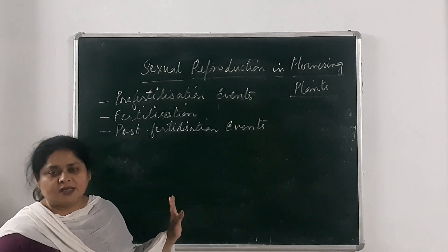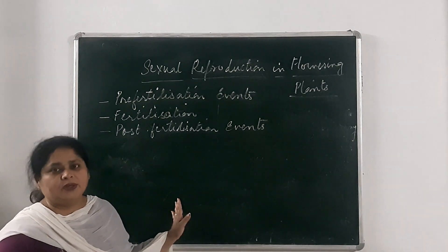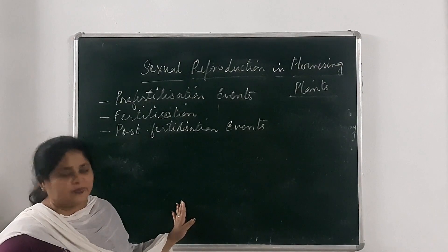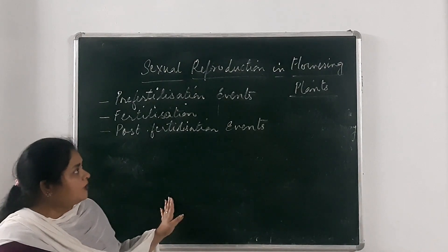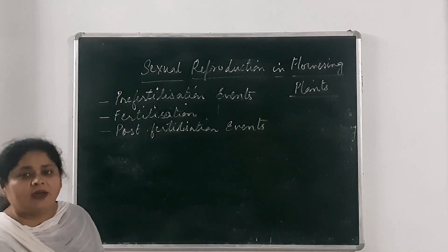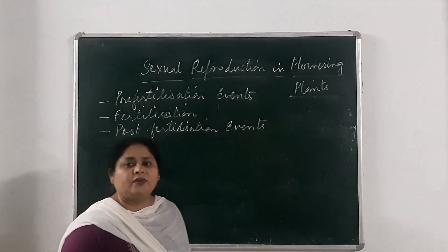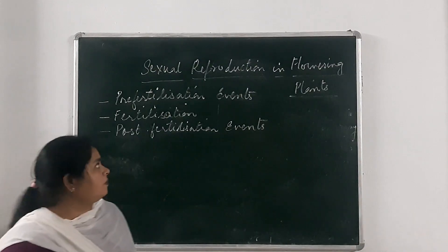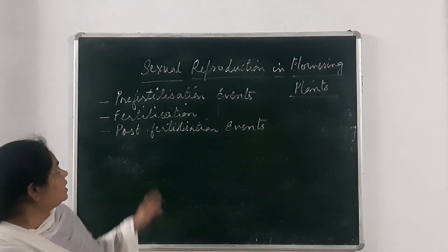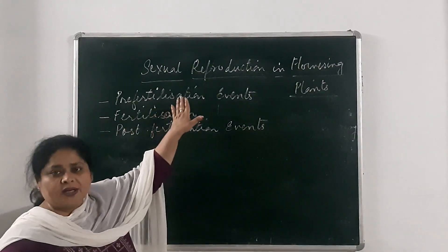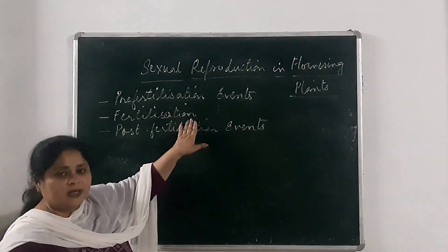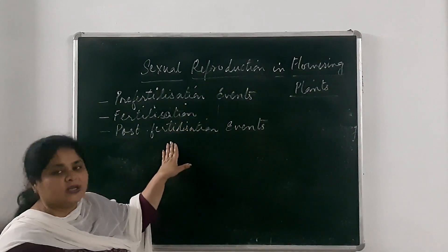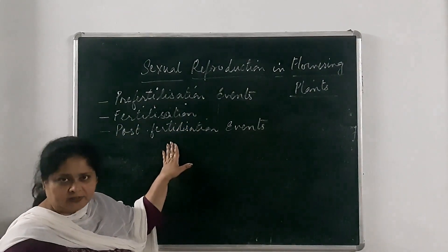We will start with the second chapter, that is sexual reproduction in flowering plants. Sexual reproduction in flowering plants includes three main events: pre-fertilization events, fertilization, and post-fertilization events.